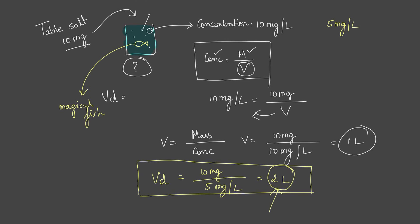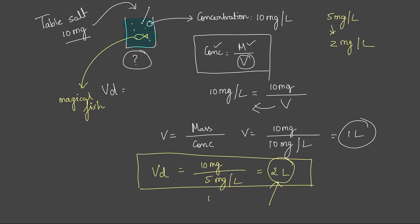Let's say the fish eats more. Then I would observe a concentration lower than 5. Let's say I observe 2 milligrams per liter. If I calculate, that's 5 liters. So the more the fish eats, the lower the concentration that I will measure, and the higher the volume that I would calculate. So the more the fish eats, higher will be the volume of distribution that I estimate.